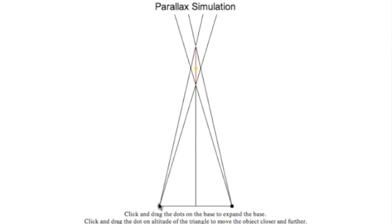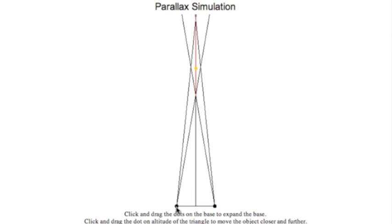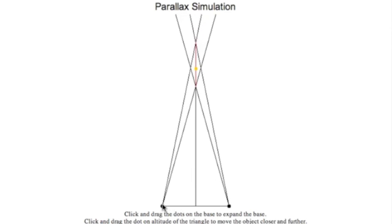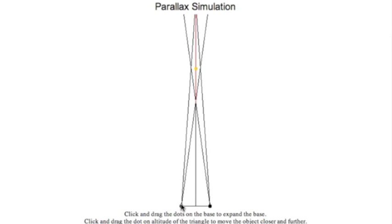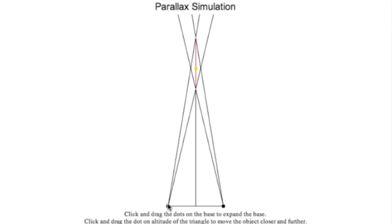Notice that we get the greatest error in measuring when our parallax angle is really small. In order to decrease this error in measuring, we need to increase our parallax angle, and we can do so by increasing the baseline.